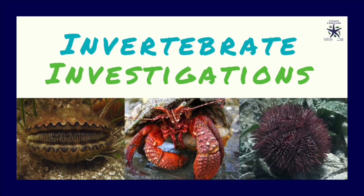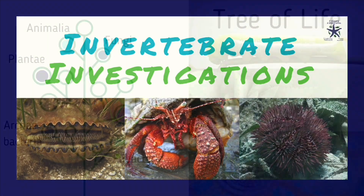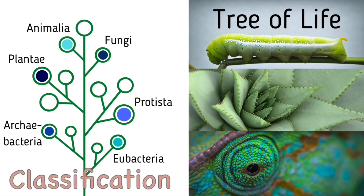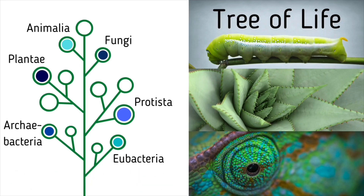Today we are diving into the world of invertebrates. How can we tell the difference between groups of invertebrates? Organisms are sorted into groups based on their similarities in a process scientists call classification. Classification helps scientists better understand the tree of life.